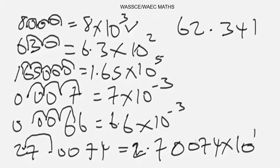Now let's solve this last example. For this last example, 62.341, to express this in standard form, you're going to move backwards once. When you do this, you're going to have 6.2341 times 10 to the power 1, since we moved backward once.